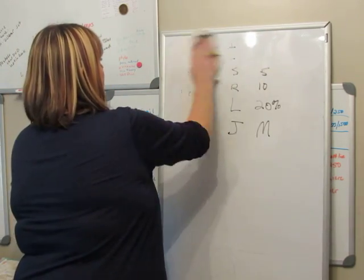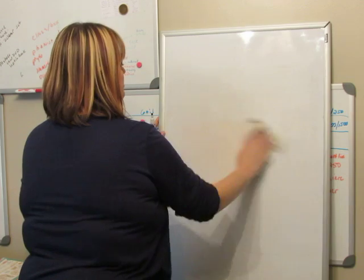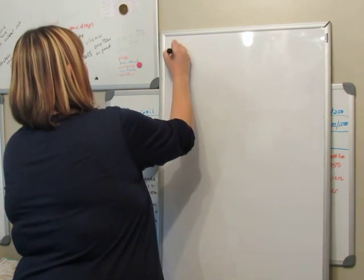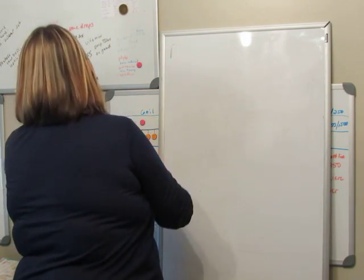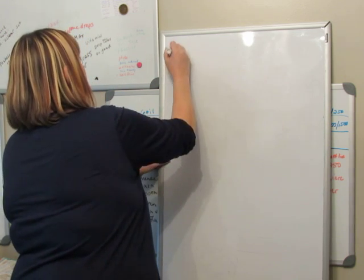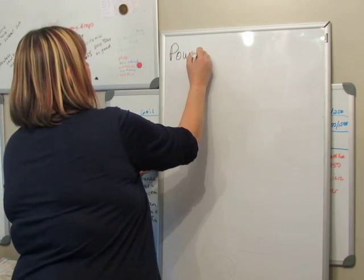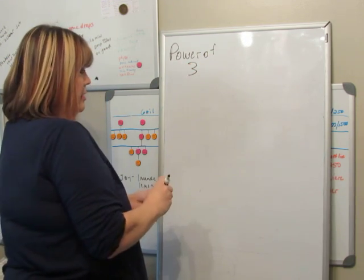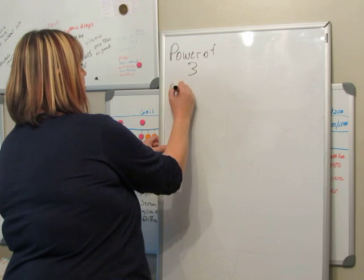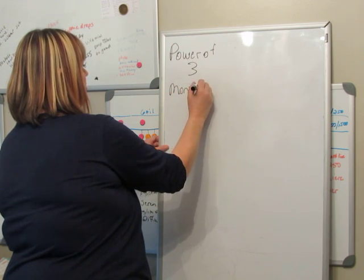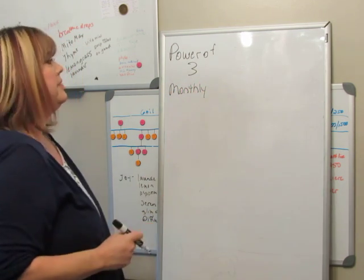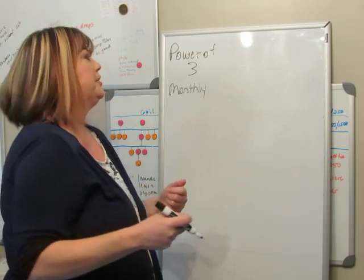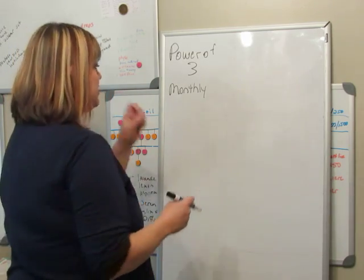Okay, so now let's look at Power of Three. So Power of Three is the next way that you get paid, and that is monthly. Usually around the 15th. They say the 15th, but sometimes it's a day or two later. So this is how Power of Three works.